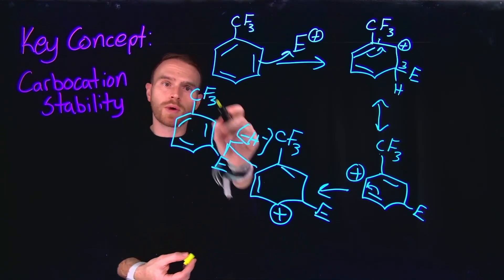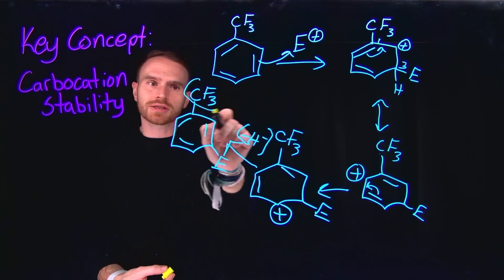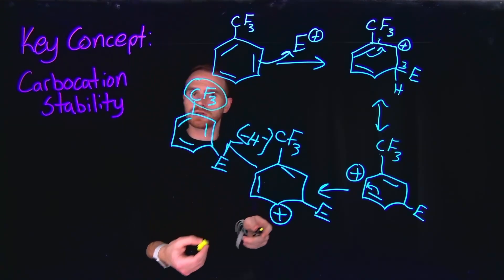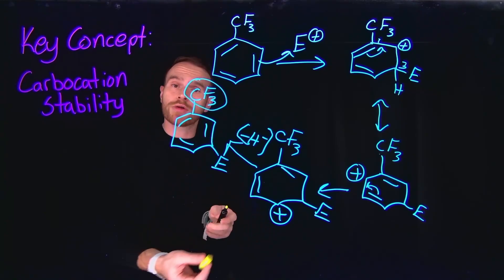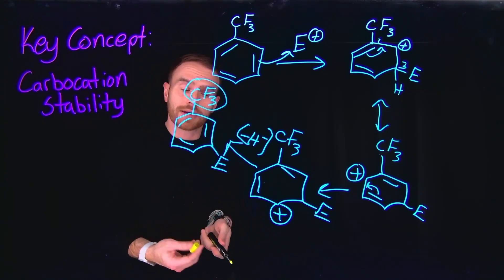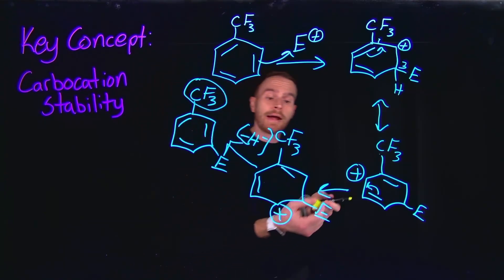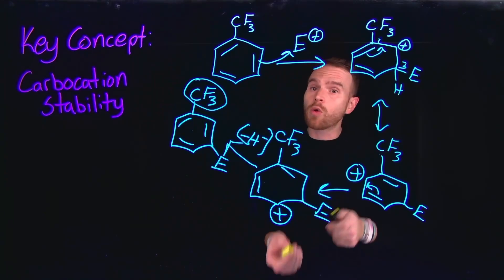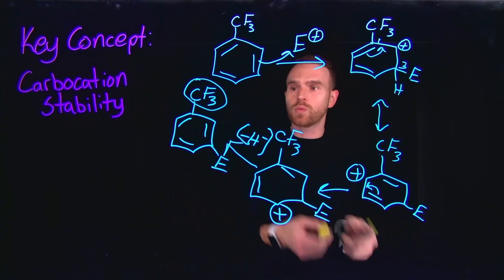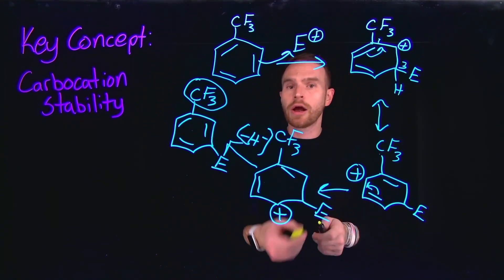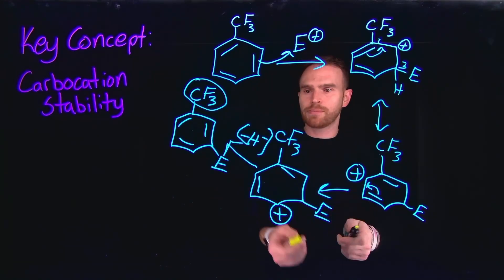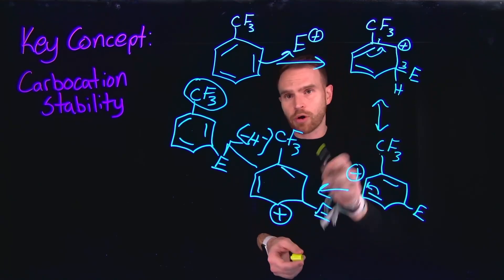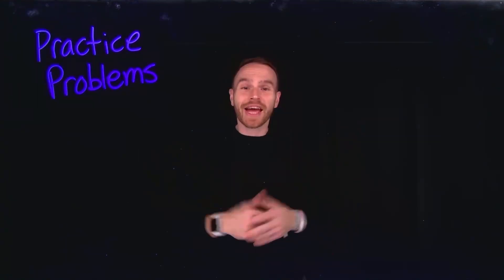When considering substituents on monosubstituted benzene and whether they direct ortho/para or meta, we need to evaluate the resonance-stabilized forms of the intermediates that occur as part of this mechanism.